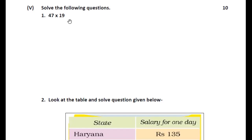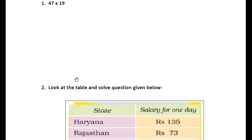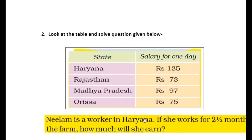Next: Solve the following. इसे अच्छी तरह से solve करना है और पूरा process लिखना है — इसमें answer in one word नहीं है. जैसे 47 into 19, उस तरह से solve करके लिखिए. Next, इस table को देखिए — state और one day की salary दी गई है: Haryana में 135 rupees, Rajasthan में 73, Madhya Pradesh में 97, और Orissa में 75. Neelam is a worker in Haryana. If she works for two and a half months, days निकालकर 135 में multiply करिए.